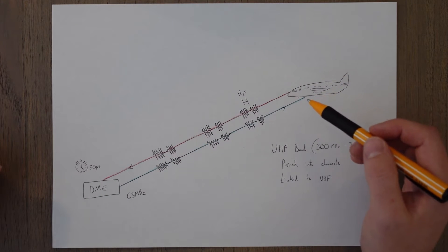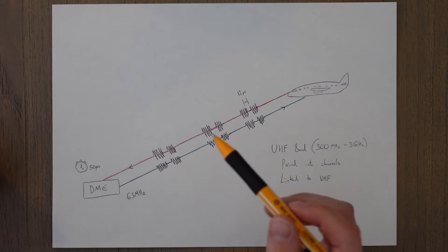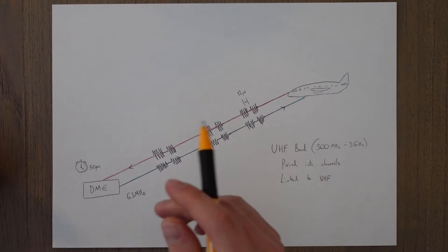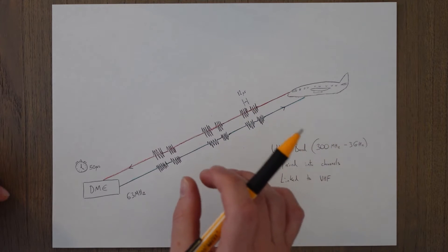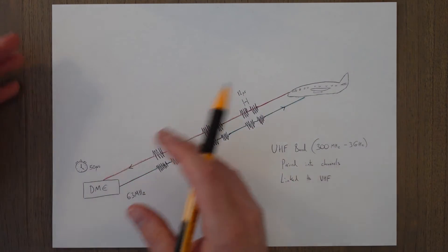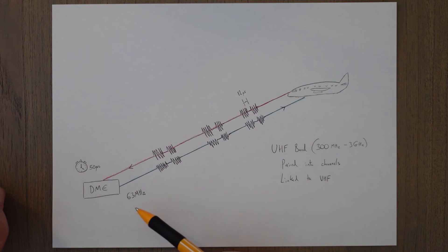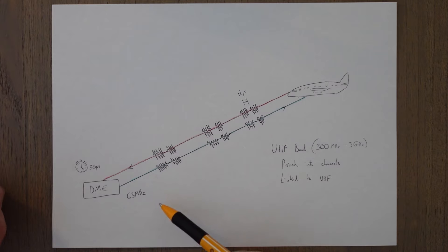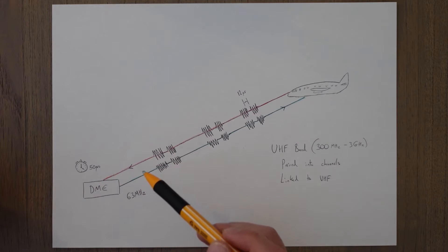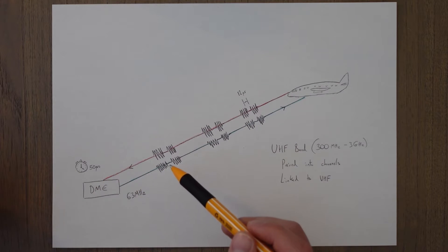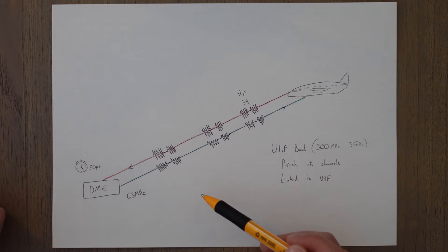The aircraft fires out this unique pulse pair signal and the ground station transmits a reply back on a slightly different frequency, but the jittering will be transmitted back so the aircraft receiver can distinguish its own signal from others. The ground DME station sends back the signal 63 megahertz different in frequency with a delay of 50 microseconds factored in. This means the aircraft receiver can be sure the reply isn't a reflection from a mountain, because the different frequency means it can only come from the DME station.